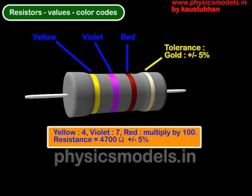So gold is plus minus 5% so the manufacturing process turns out resistors within that band of 4700 plus minus 5% of 4700.